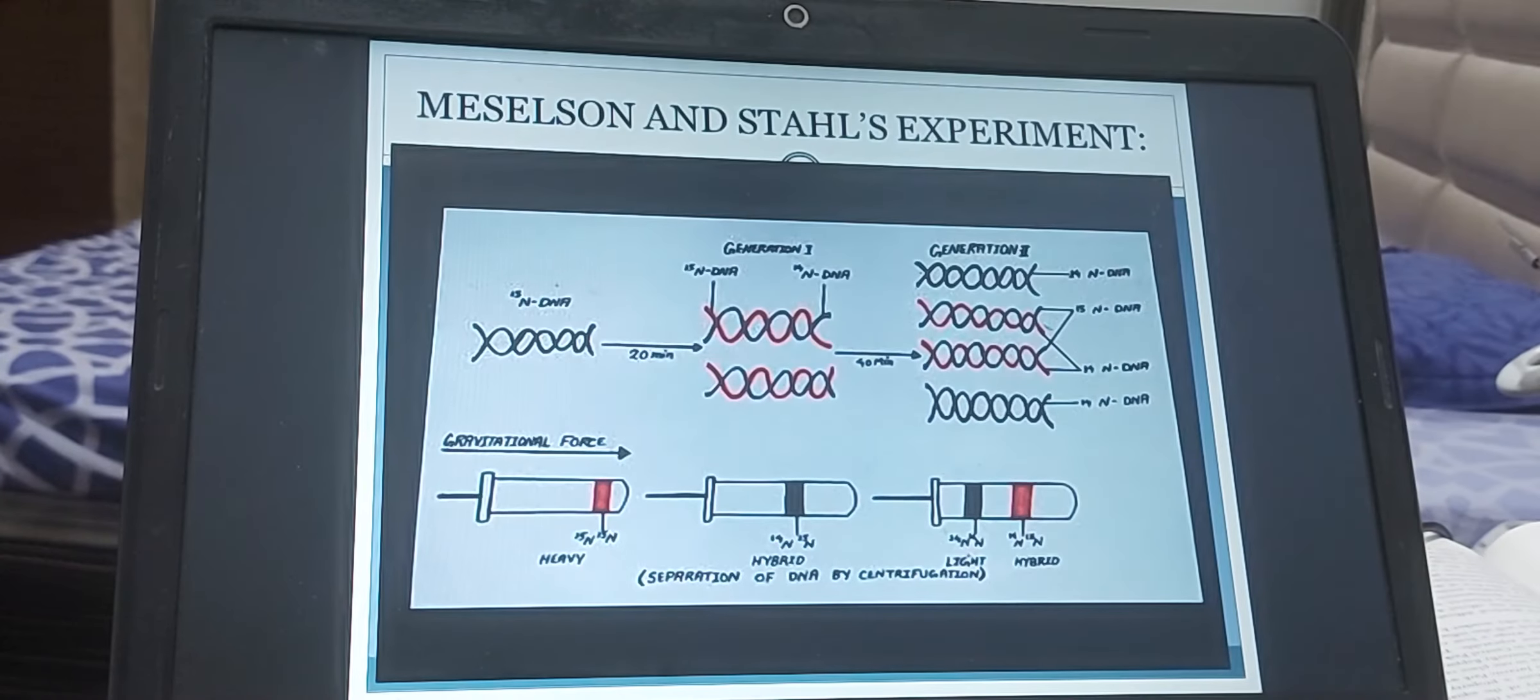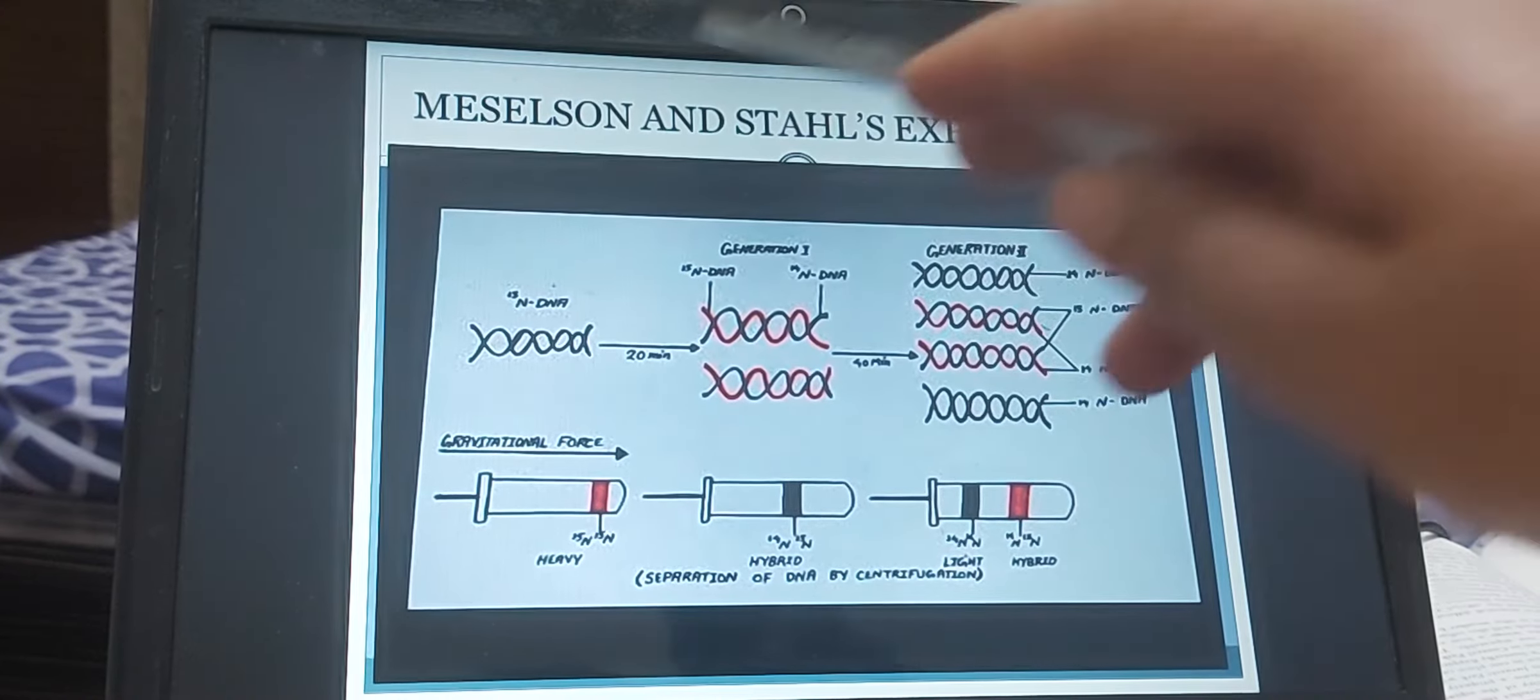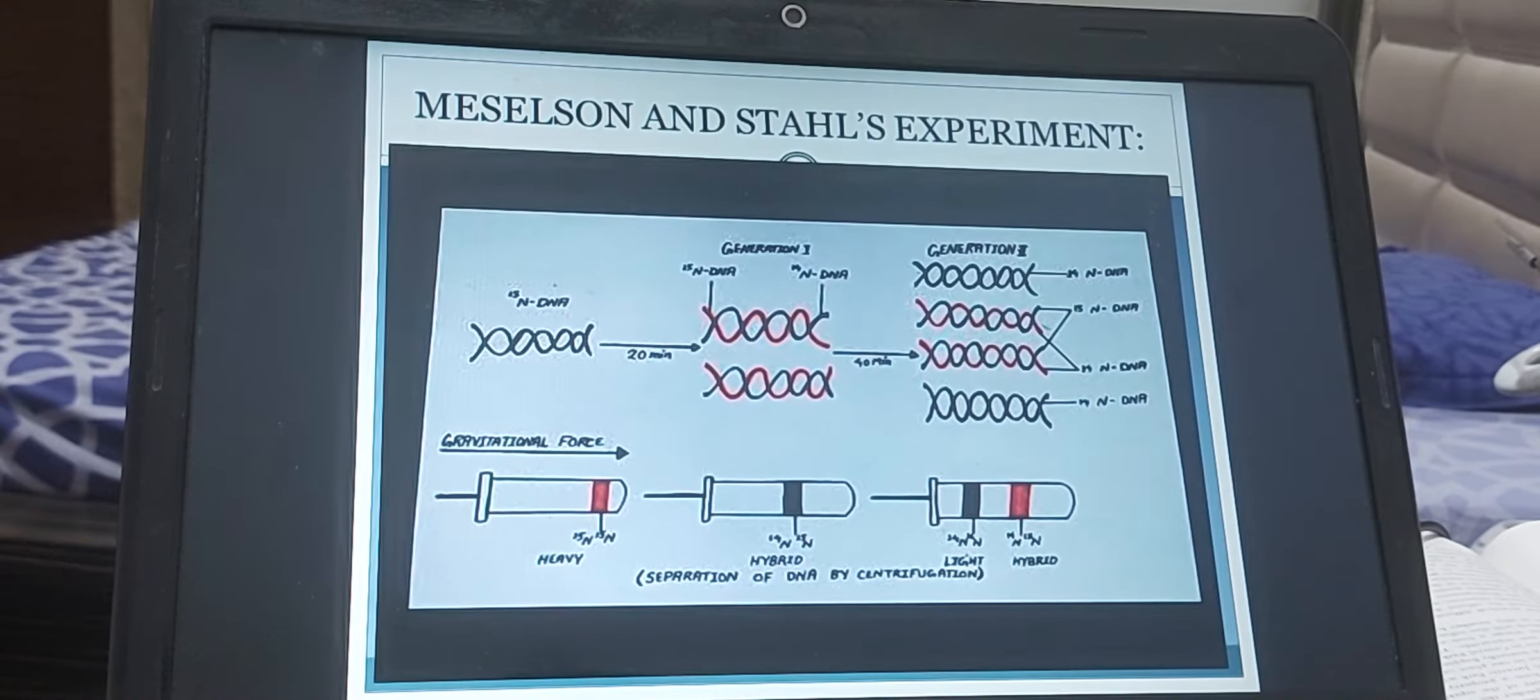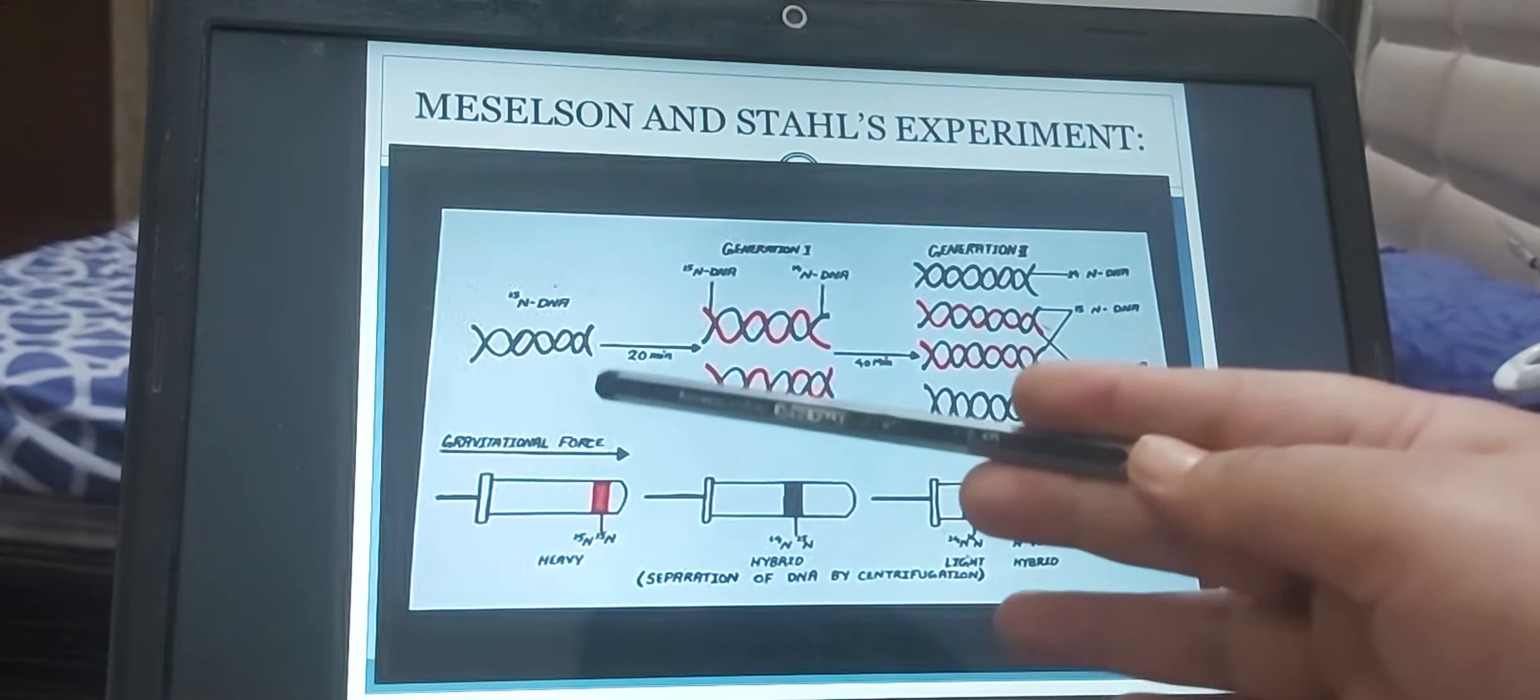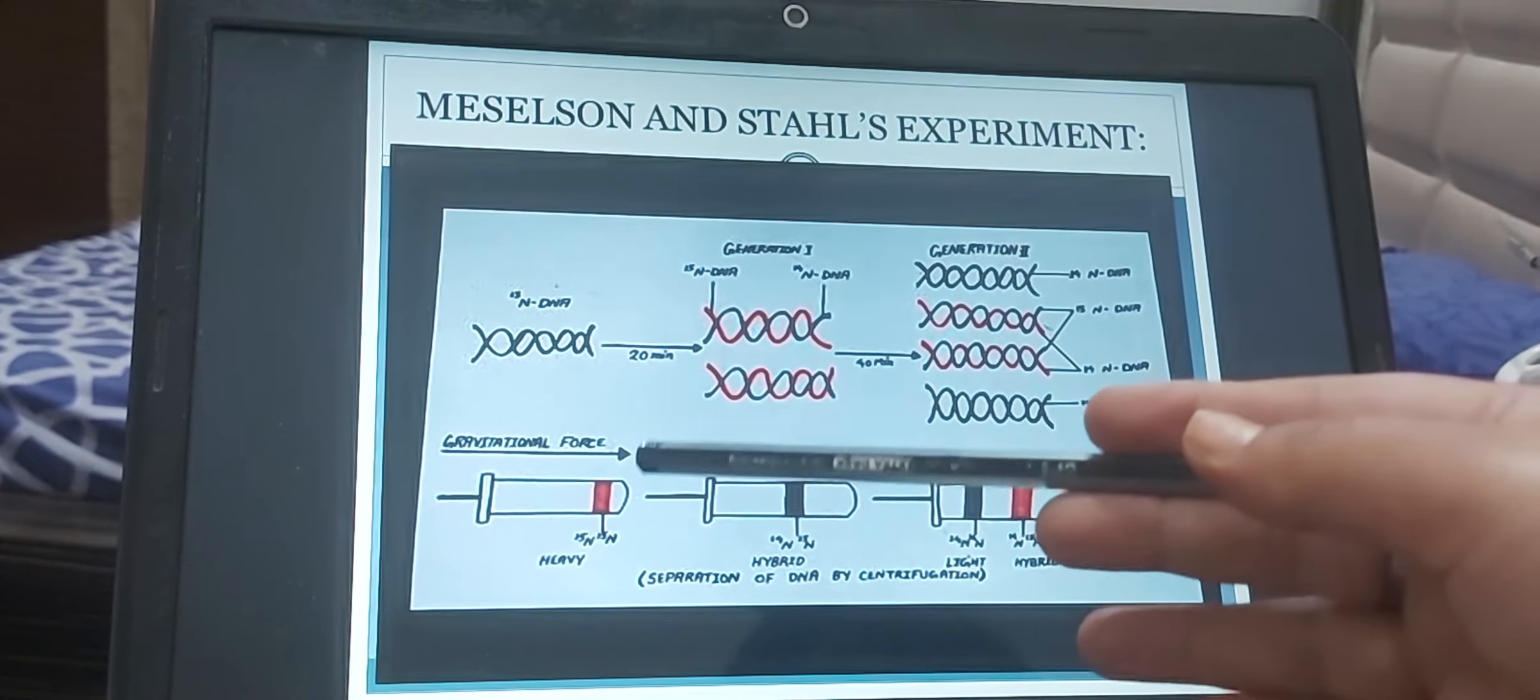Then the next one is, what are the experimental evidences in case of semi-conservative mode of replication? So Meselson and Stahl, they were the two scientists who experimentally confirmed this thing that DNA replication is semi-conservative replication. For this, they took the E. coli bacteria and they grow the E. coli bacteria on a nutrient medium for many generations. And that nutrient medium is containing the N15 isotope of the nitrogen. N15 is a heavy isotope of nitrogen. N15 is not the radioactive isotope. And this N15 can be extracted, the DNA containing N15 can be extracted through the centrifugation using the cesium chloride density gradient method.